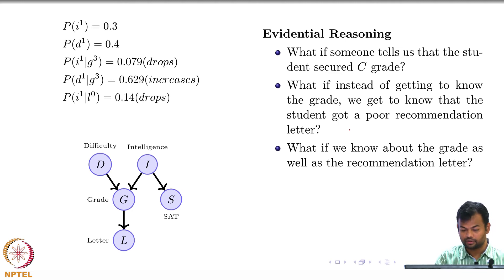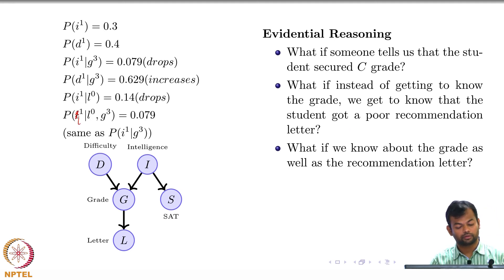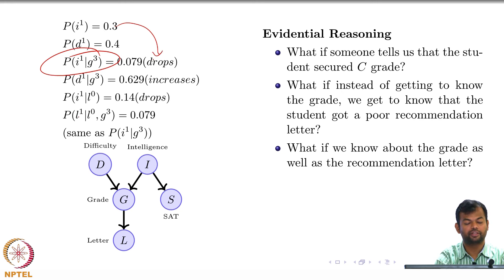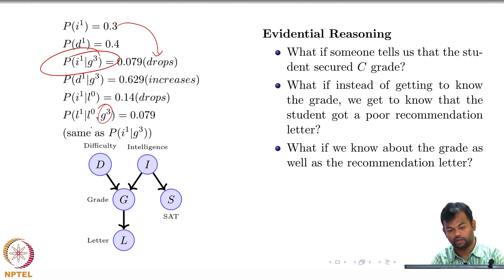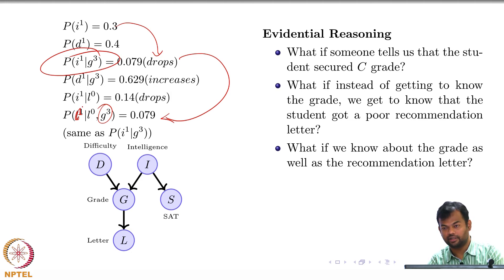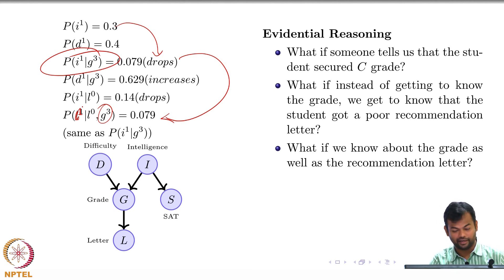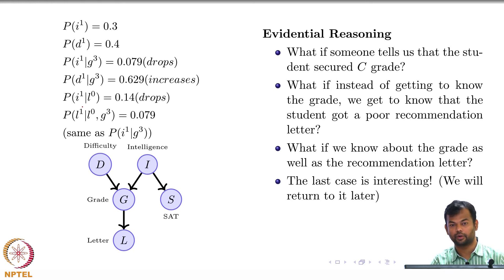Now suppose we know both the grade and the recommendation letter. When we knew the grade was bad, the probability of being intelligent drops from 0.3 to 0.079. If we additionally know the student got a bad recommendation letter, we still end up at the same value. Why? Because given the grade, intelligence and the recommendation letter are conditionally independent. Once you know the grade, it completely determines the recommendation letter—the intelligence no longer adds information. We will return to this when discussing independencies encoded in a Bayesian network.